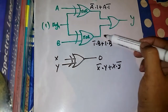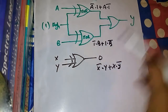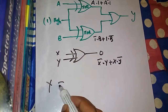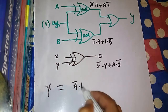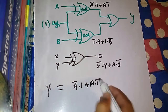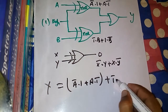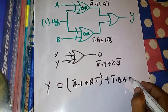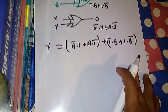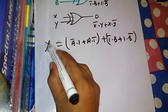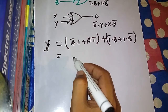From this given digital circuit we see that the output of the first XOR gate and the output of the second XOR gate are going into the next OR gate. So the main output Y of this circuit would be the output of the first XOR gate — A bar dot one plus A dot one bar — OR the second XOR gate output — one bar dot B plus one dot B bar.